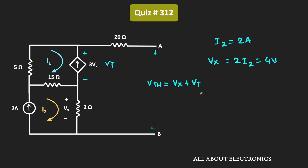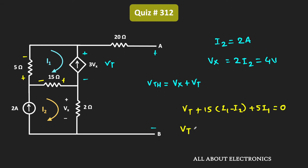Now we need to find voltage Vt. Applying KVL in this loop, we can write: Vt plus 15 times (I1 minus I2) plus 5 times I1 equals 0. That means Vt equals minus 20 times I1 plus 15 times I2.